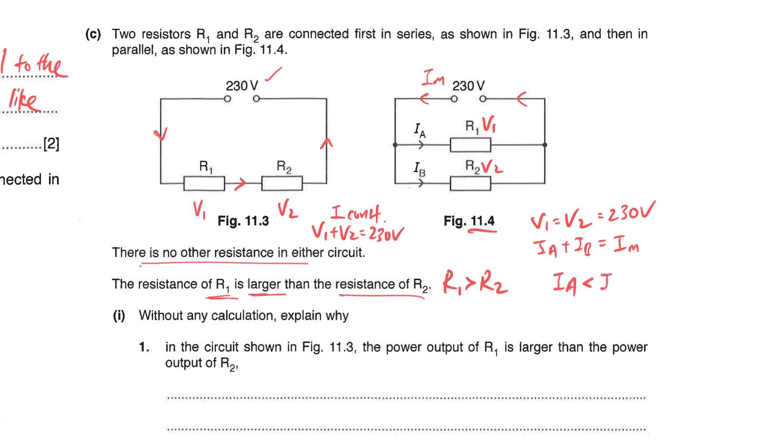Next comes the explanation. You're given that without doing any calculation, explain why in the circuit shown in figure 11.3 the power output of R1 is larger than the power of R2. For this, in general when you think about power most students will think that power equals to IV. But the problem is you know that current is constant but you do not know your V. Some students may think that I can use V equals to IR. As current is constant, so if my R1 is bigger my V1 will be greater. But if that's the case there will be a two-step kind of explanation and it's not so straightforward.